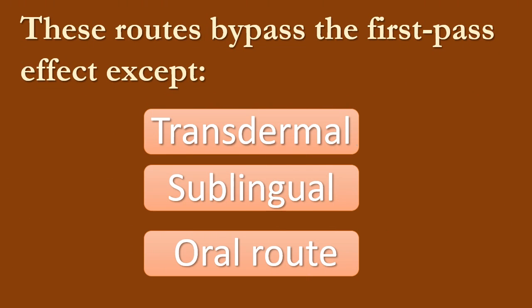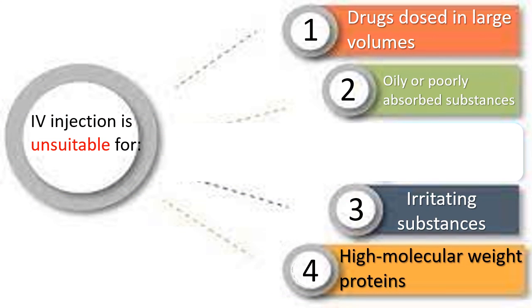Which routes bypass the first-pass effect — except? The oral route. IV injection is unsuitable for? It is unsuitable for oily or poorly absorbed substances.